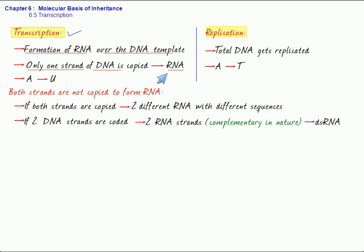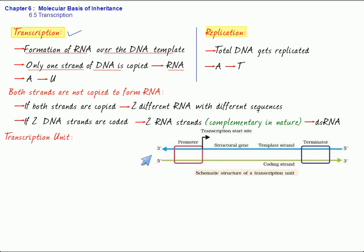Now, we talk about a transcription unit. What is it? It is a segment of the template strand which takes part in transcription. A transcription unit, as you can see in the diagram, consists of three units or three regions: a promoter, the structural gene, and a terminator. You can see the promoter and terminator on either side of the structural gene.